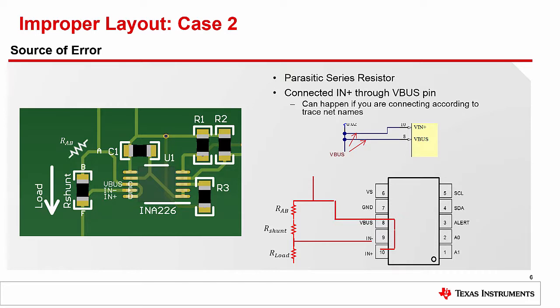The paths from the shunt to the input pins are not equal. This imbalance in trace length can contribute error due to the input bias current sunk into the device input pins, especially as the traces get longer and the difference in their lengths becomes greater. Also, the impedance from V bus to ground is not equivalent to V IN+ to ground, thereby pulling more input bias current across the unequal input traces. To avoid these issues when doing your layout, use differential pair routing for your sense inputs, as this should inherently maintain equal resistance for both traces. Also, do not route your sense input trace through V bus.